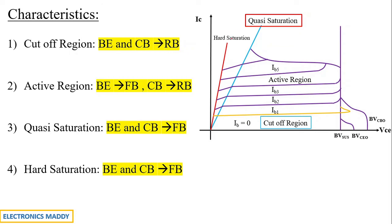What is hard saturation region? Hard saturation is basically the normal saturation region of a normal BJT — nothing else. Compared to quasi saturation, the resistance offered is slightly lower, and the power loss is also very low because the resistance is much less. The only disadvantage is that it is used for low-frequency operation, because it takes a lot of time to recover from hard saturation back to the cutoff region — unlike quasi saturation, where the device can be turned off as quickly as possible.